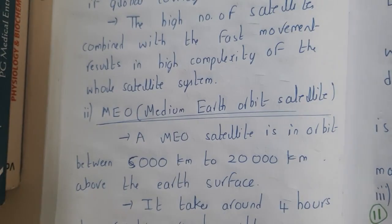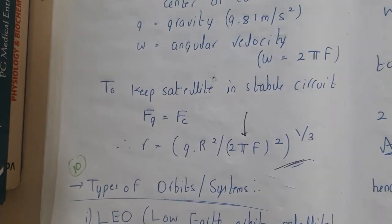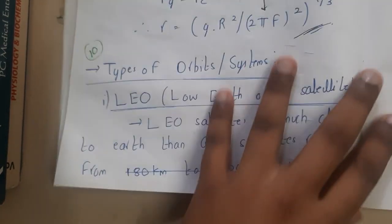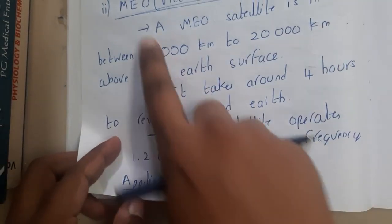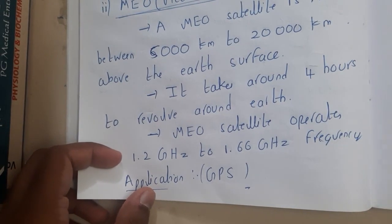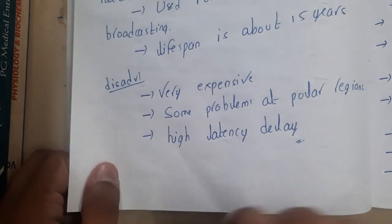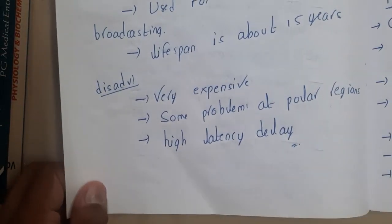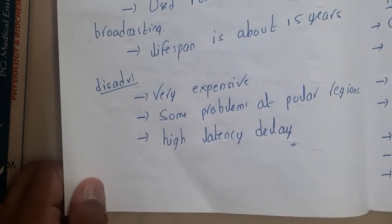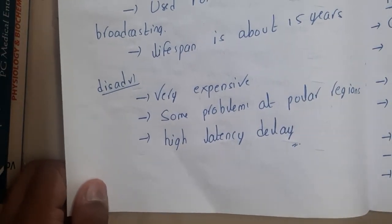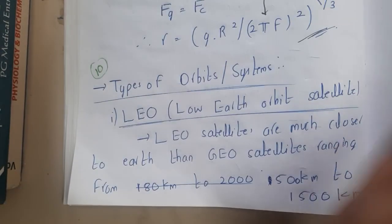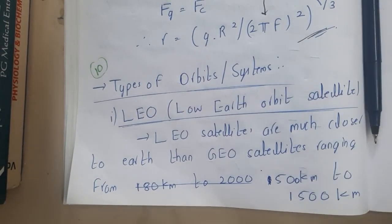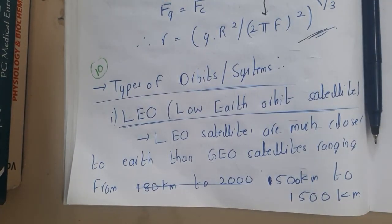In this lecture we will be discussing about LEO and MEO. In the next lecture we will be discussing about GEO and HEO. After that we'll be comparing all of these and drawing a comparison table.